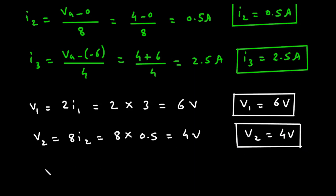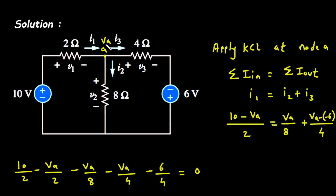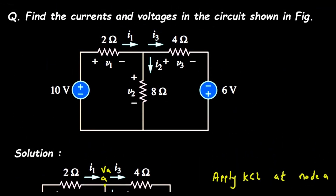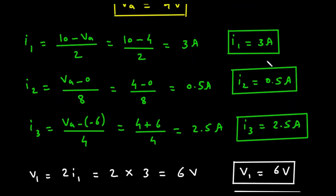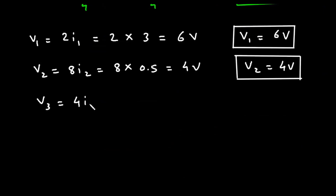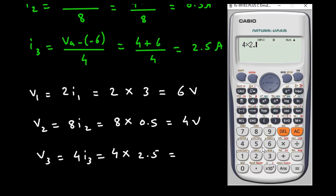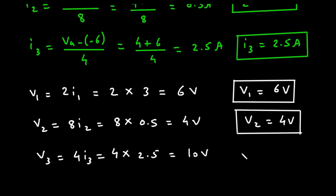Next, V3 = 4 × I3. Using current times resistance: V3 = 4 × 2.5 = 10 volts. Therefore V3 equals 10 volts.